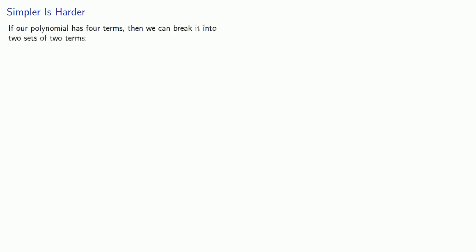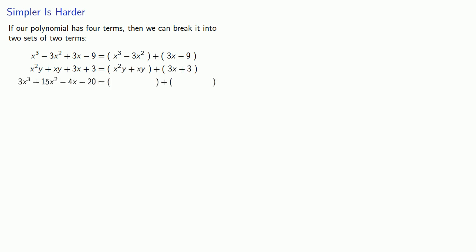One peculiar feature of mathematics is that sometimes a simpler problem is actually harder. If our polynomial has four terms, we can break it into two sets of two terms. So x cubed minus 3x squared plus 3x minus 9, or x squared y plus xy plus 3x plus 3, or 3x cubed plus 15x squared minus 4x minus 20, or x squared plus 4x plus 3x plus 12 — in each case, we group the first two terms and the last two terms.